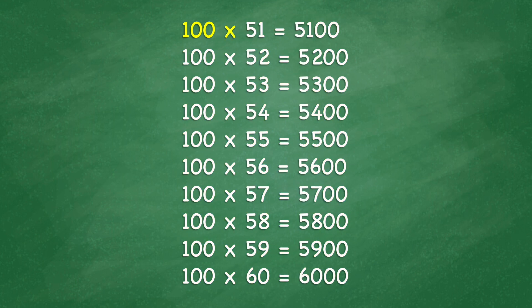100 times 51 equals 5,100. 100 times 52 equals 5,200. 100 times 53 equals 5,300. 100 times 54 equals 5,400. 100 times 55 equals 5,500.